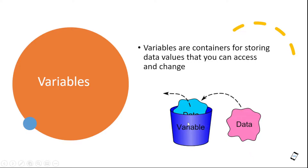I am going to use a diagram. This is a simple diagram — you can use a bucket as an analogy for a variable. When you are using data, you can store, use, or change the value. This is the basic variable concept.